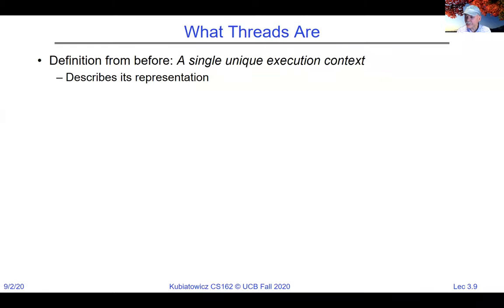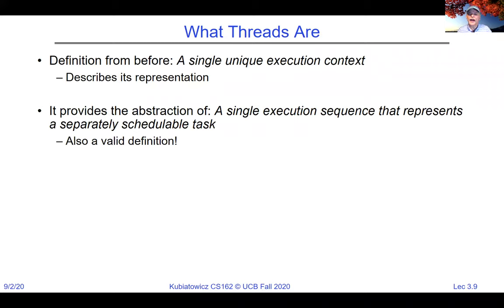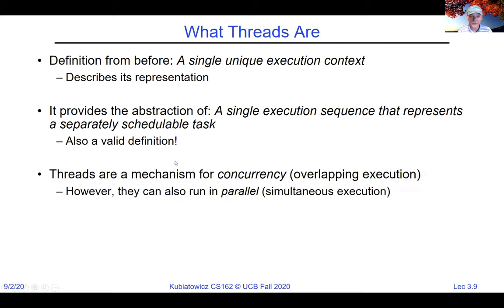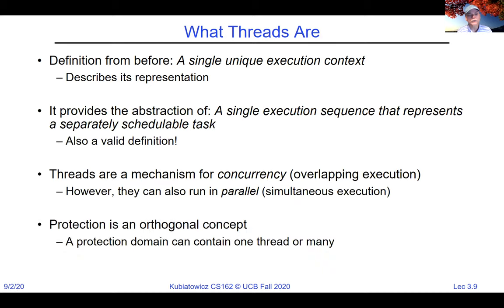A thread is a single unique execution context — an abstraction of a single execution sequence representing a separately schedulable task. Threads are a mechanism for concurrency: multiple simultaneous overlapping things. Protection is completely orthogonal to threads. The process is the protected environment; the threads run inside it. The process includes an address space plus a translation map through a page table.